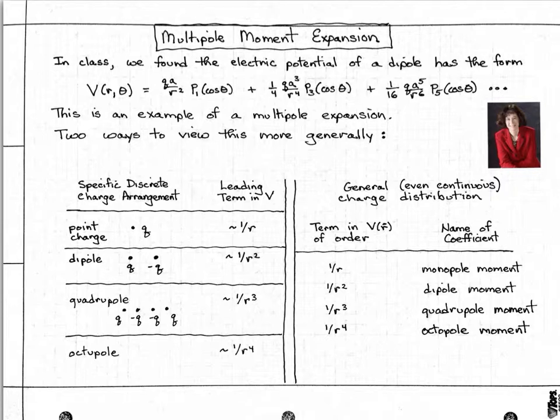We found that just as consistent with being outside of the distribution of charge, the form of the potential has an inverse dependence on the distance, and the power of the distance is one off from the index of the Legendre polynomial. So we have 1 over r squared with a P1, or 1 over r to the fourth with a P3, and so on.